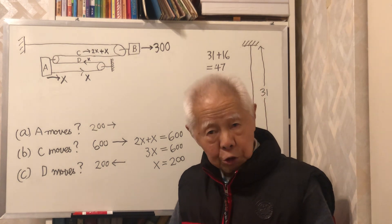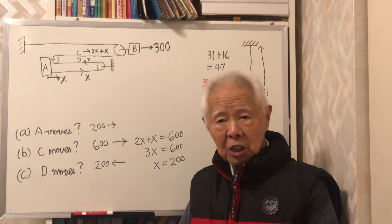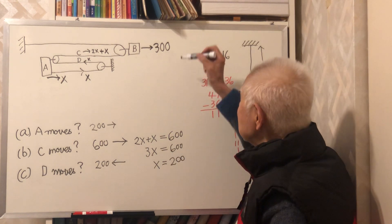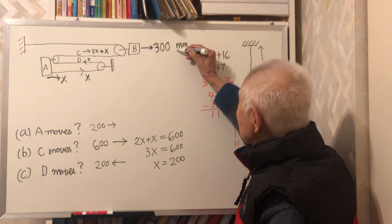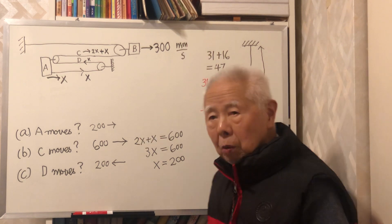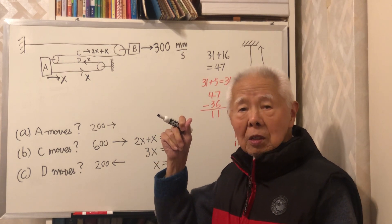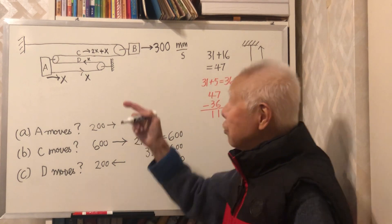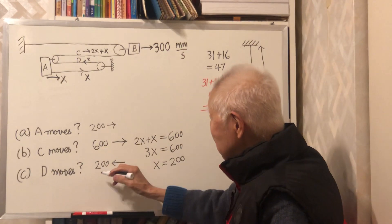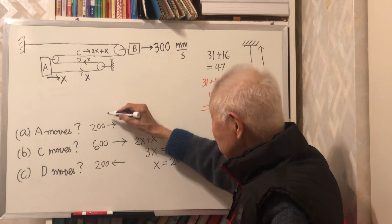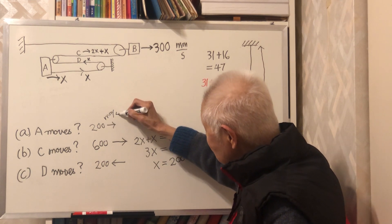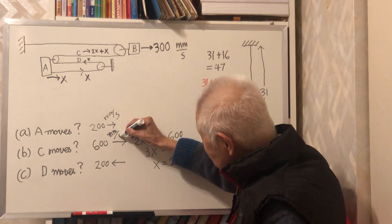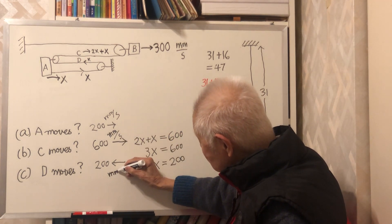The original question from Carlton University states that the velocity of B is 300 mm per second. The original question is about velocity, not distance — but it's the same calculation. If B moves at 300 mm/s, then A moves at 200 mm/s, C moves at 600 mm/s, and D moves at 200 mm/s.